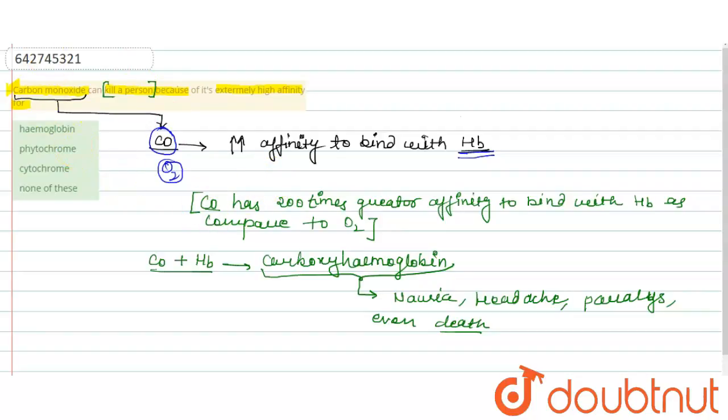So we can see that the correct answer of this question is hemoglobin, because carbon monoxide can kill a person because of its extremely high affinity for hemoglobin. If we talk about the rest of the options, phytochrome and cytochrome are both pigments, so these will be incorrect options.